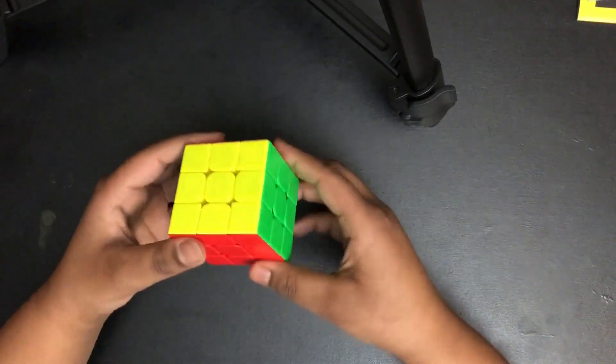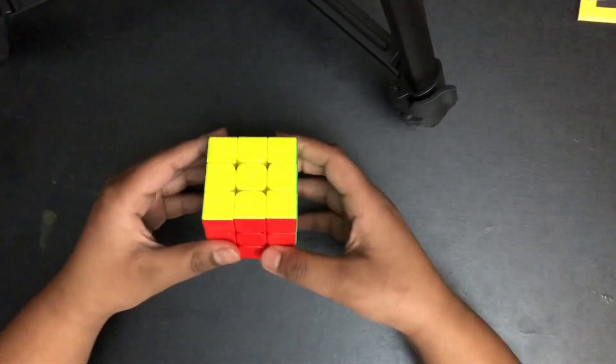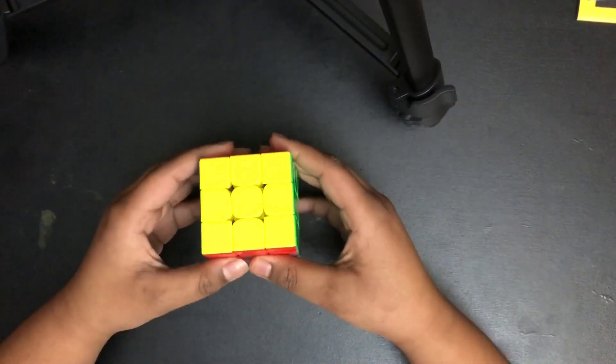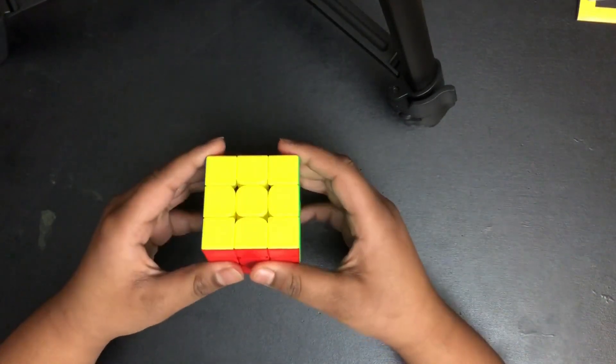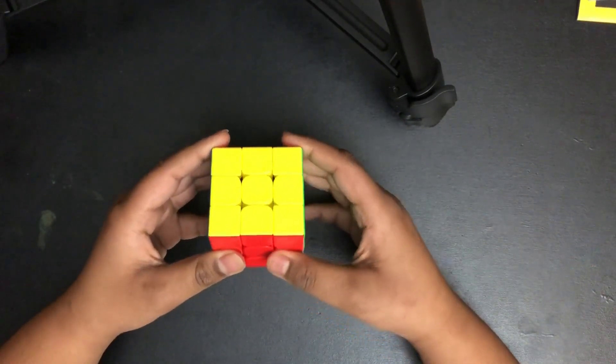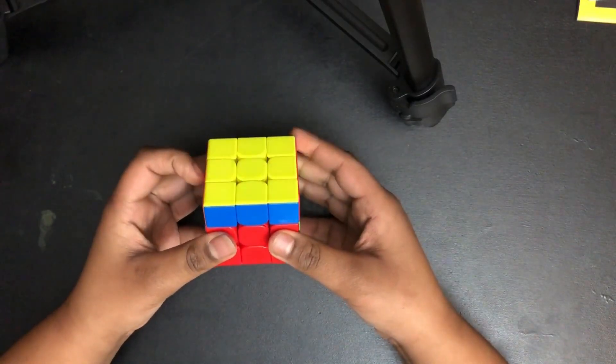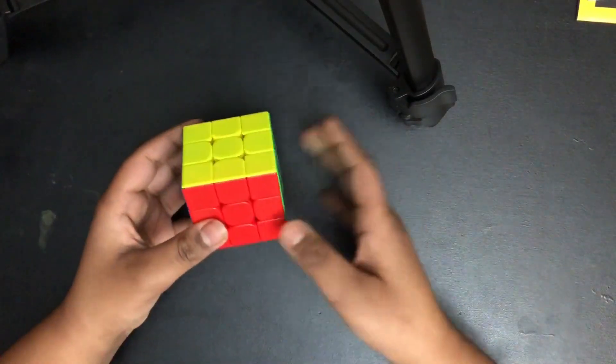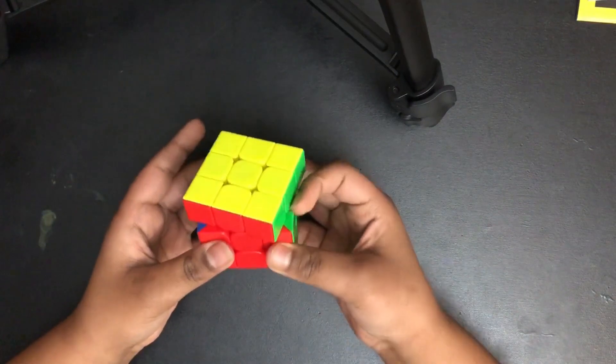And that is it for notation. It's really quick and really easy. Oh yeah, and I forgot one more. U, U prime. So this is U, U prime.